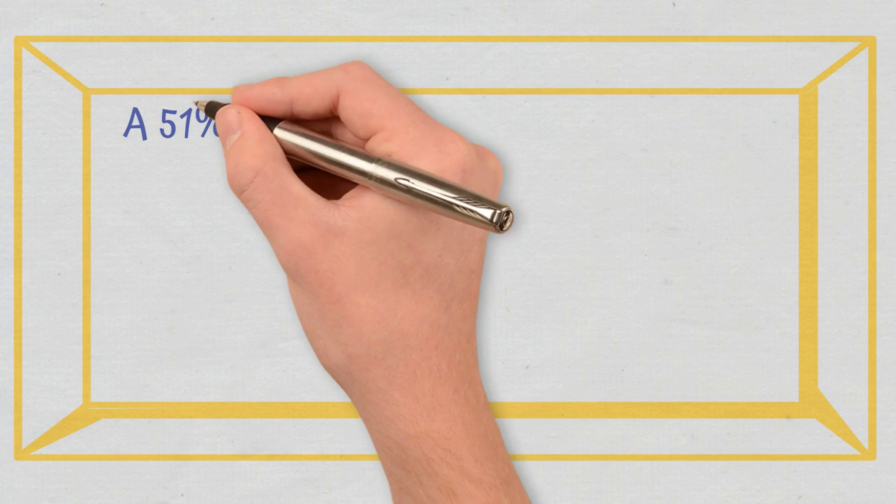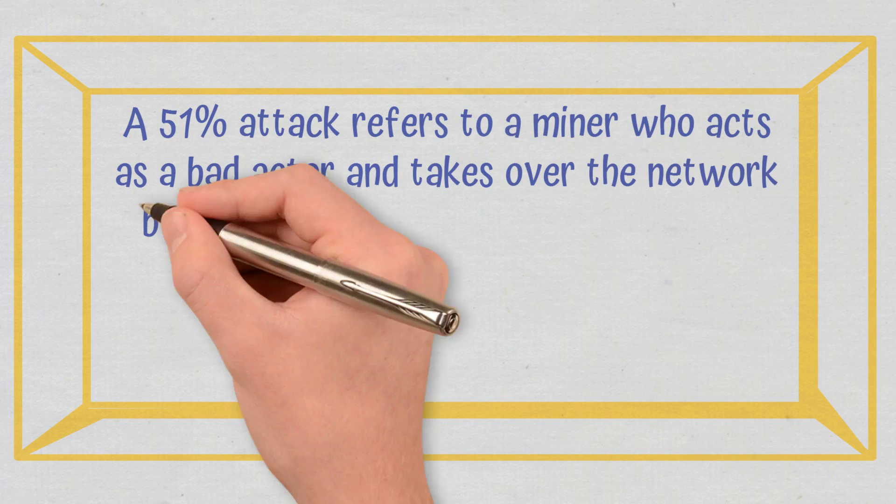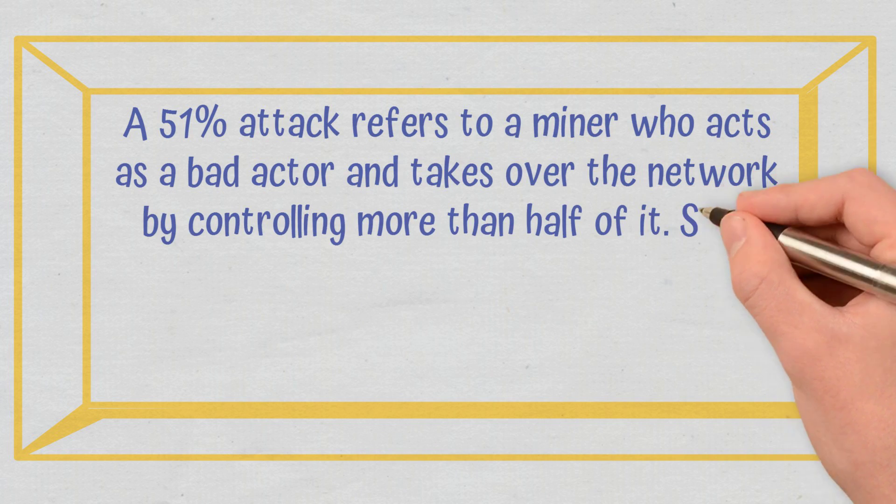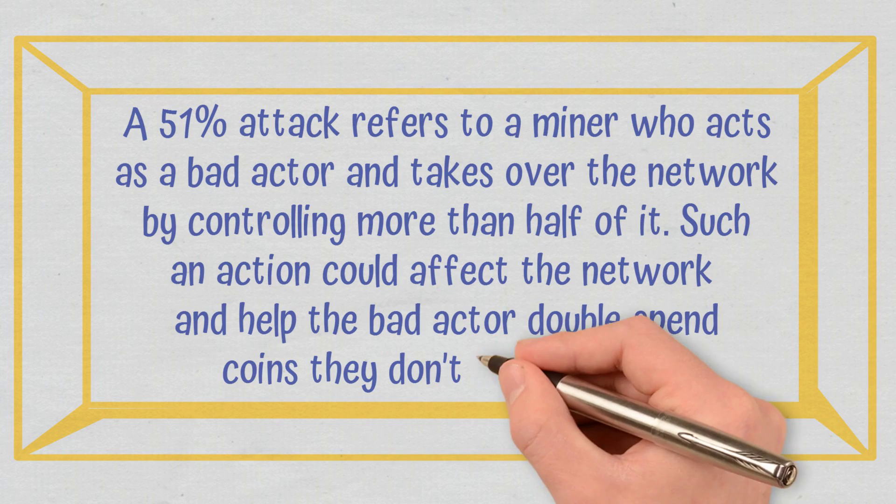Conclusions. A 51% attack refers to a miner who acts as a bad actor and takes over the network by controlling more than half of it. Such an action could affect the network and help the bad actor double-spend coins they don't actually own.